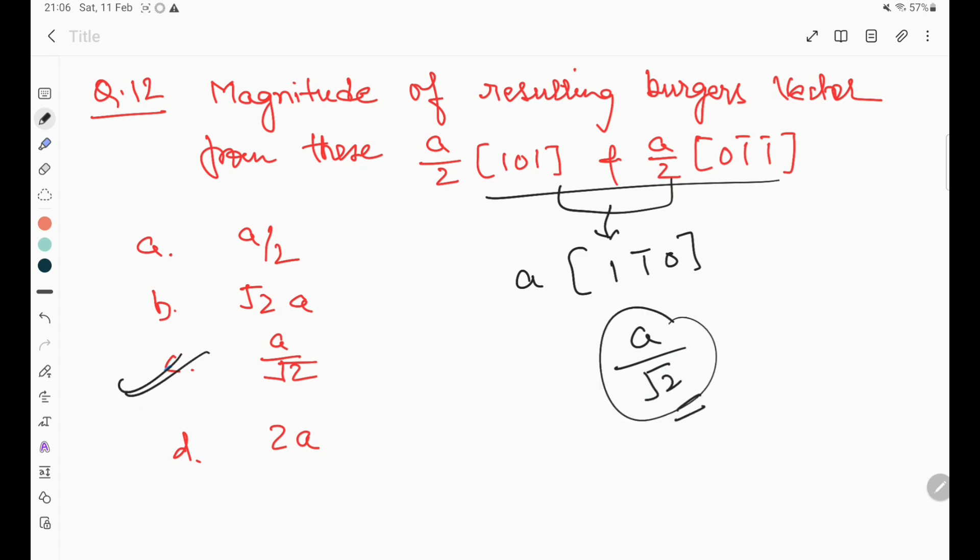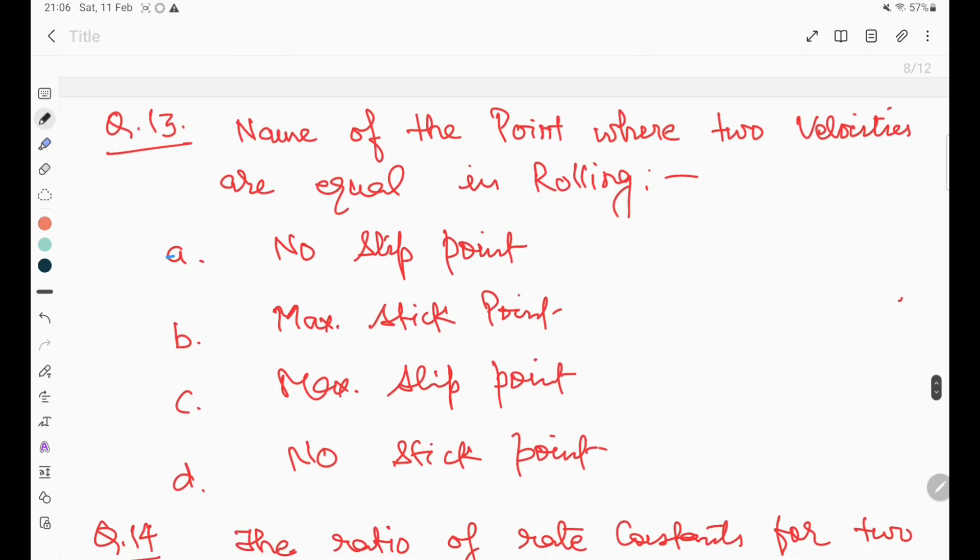In question number thirteen, name the point where two velocities are equal in rolling. That is a no-slip point. It's called the no-slip point, so this will be the right answer.